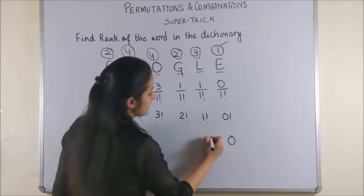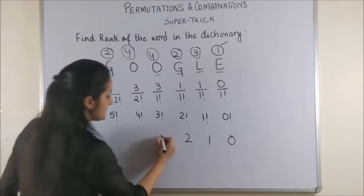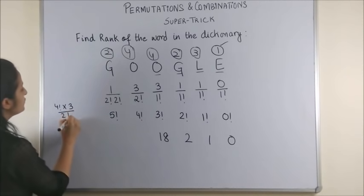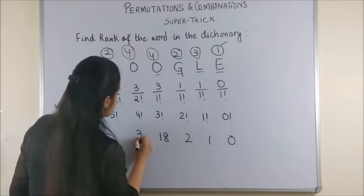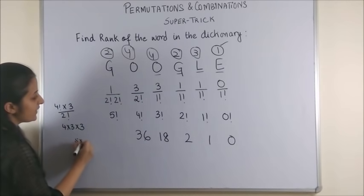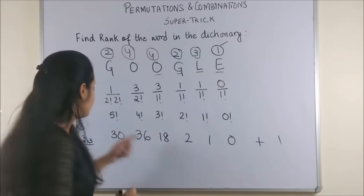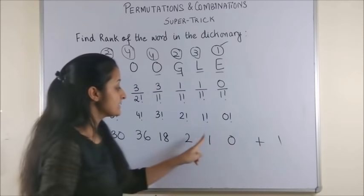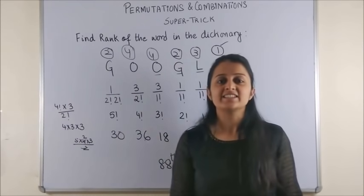Let's multiply each of them. This gives us a 0. This would give us 1. So, 2 factorial into 1 again is a 2. 3 factorial into 3 would be an 18. This will be 4 factorial into 3 upon 2 factorial. This becomes 4 into 3 into 3. So, this is 12 into 3 that's a 36. This is 5 into 4 into 3 by 2. You will be left with 10 into 3 that's a 30. Let's start adding everything up and don't forget to write plus 1 in the end. So, 30 plus 36 is 66, 66 and 20 makes it 86, 87 plus 1, 88. So, Google has the rank 88 in the dictionary.